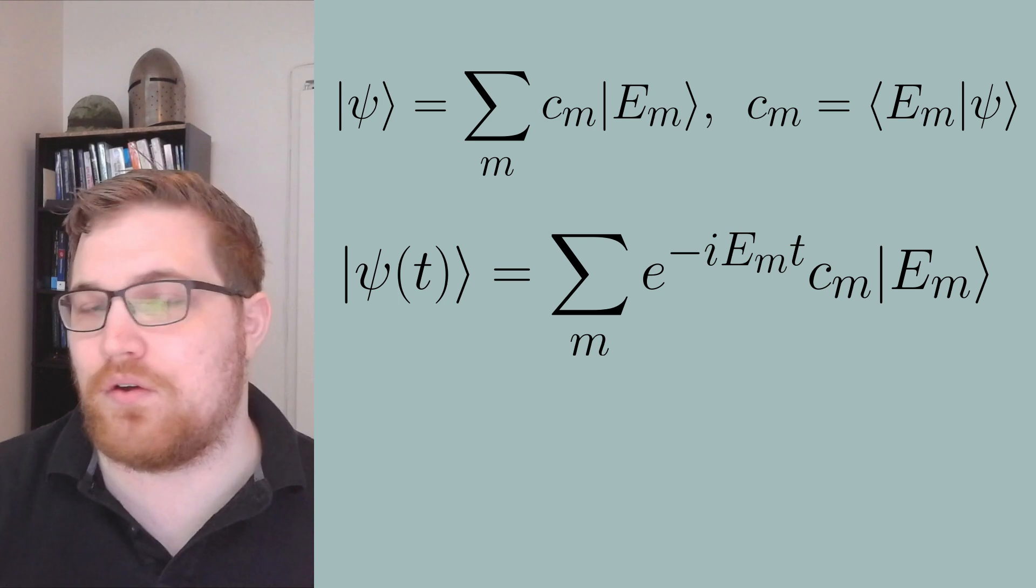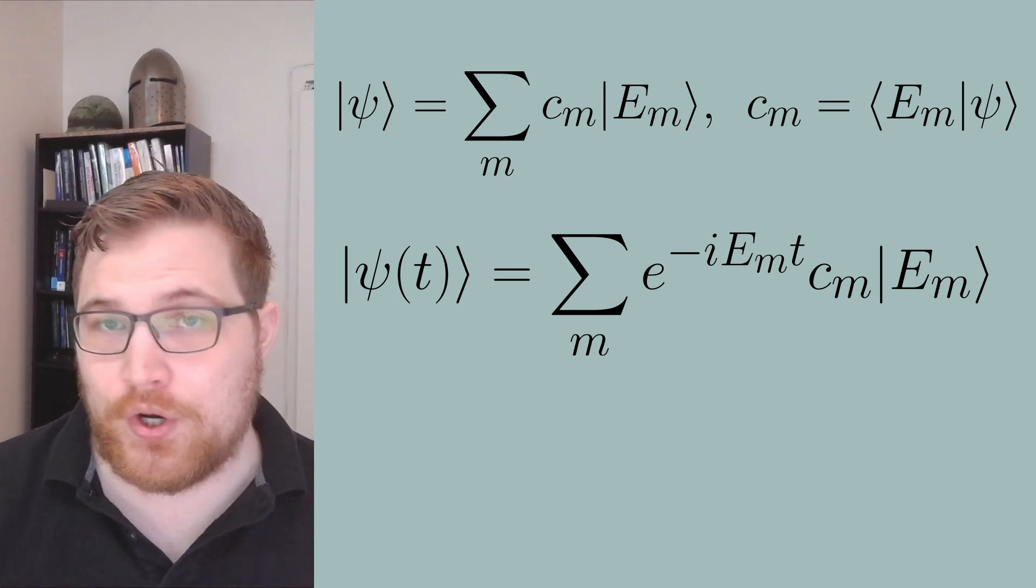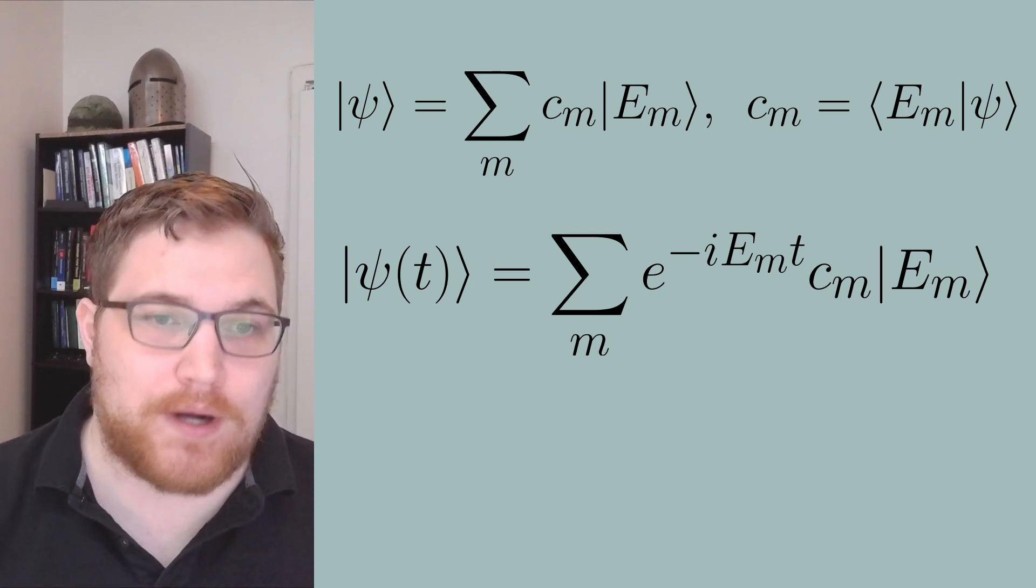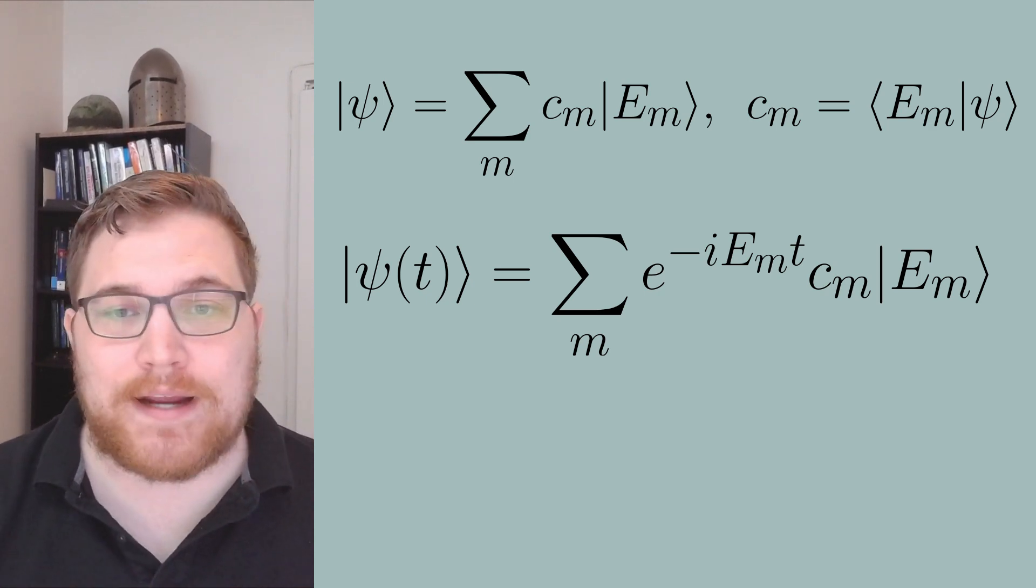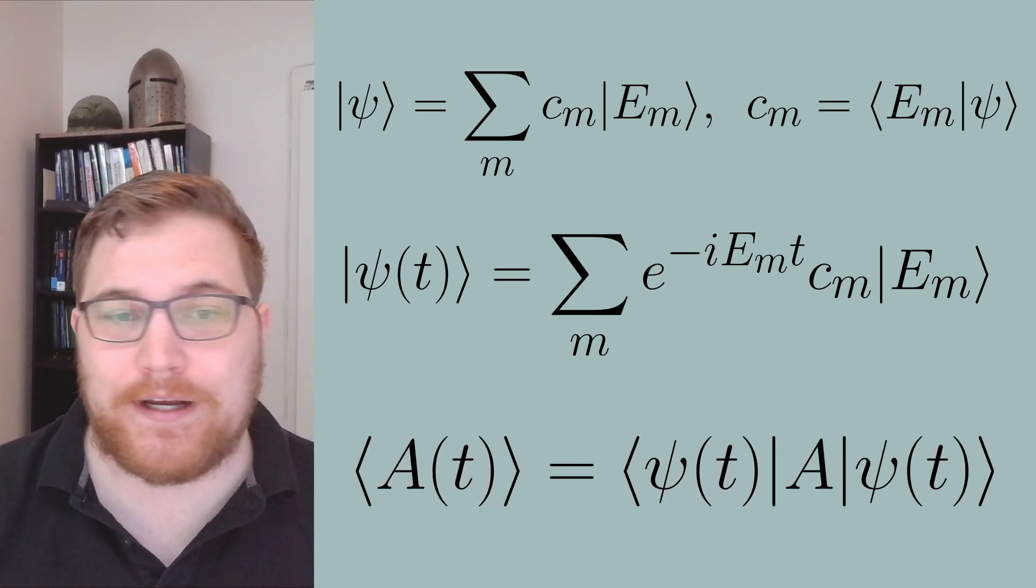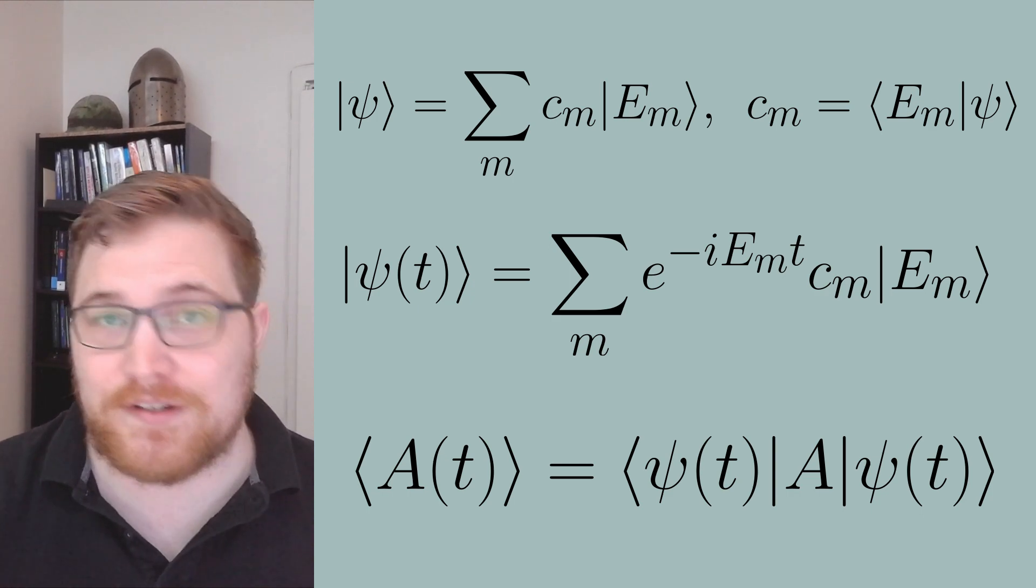We can't really say whether or not a state is in equilibrium or not on its own, as the expression will always vary in time. We can, however, track the expectation value of some observable A in time and see if that expectation value approaches a stationary value.